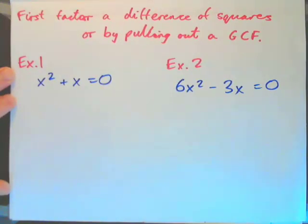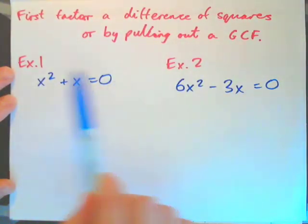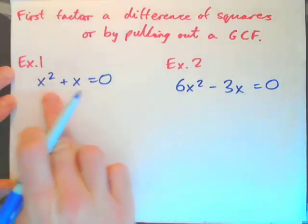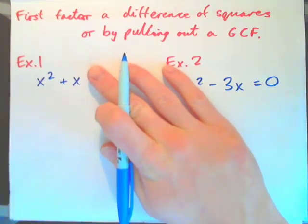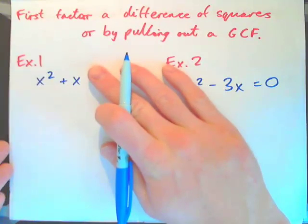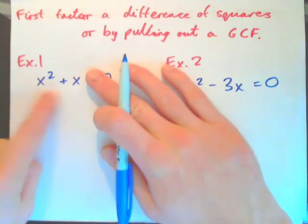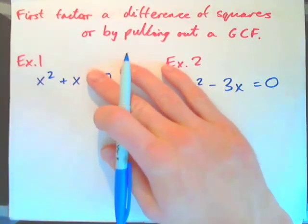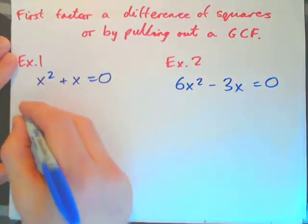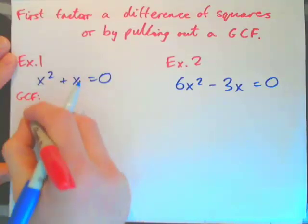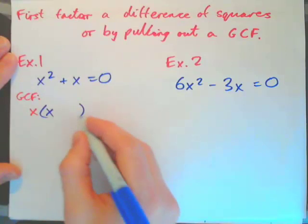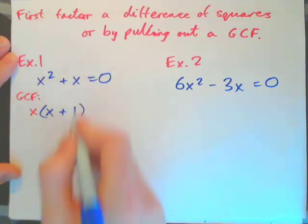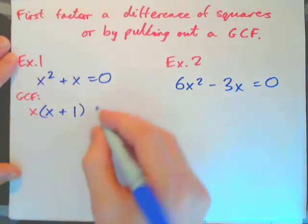The first thing we need to do is factorize the left-hand side and have one side equal to 0, so we can use the zero product rule. If I factorize x squared plus x, and you should use your factoring sheet to figure it out — if you have an x squared term and an x term, you always pull out a common factor. The greatest common factor is x.